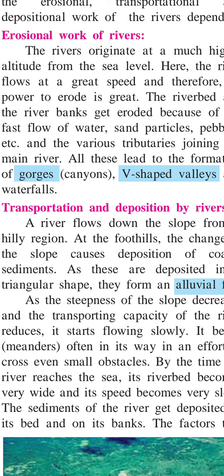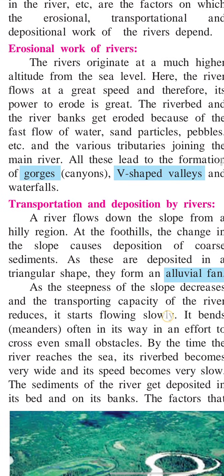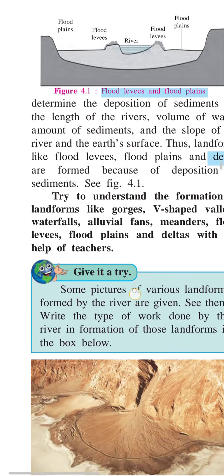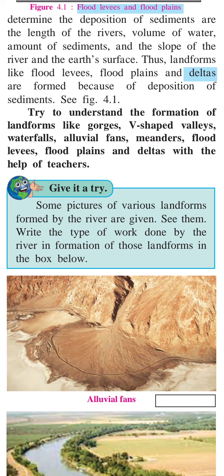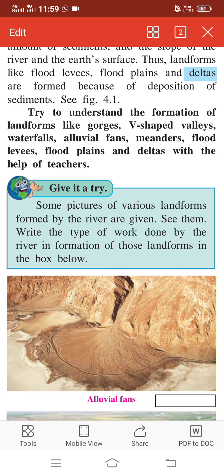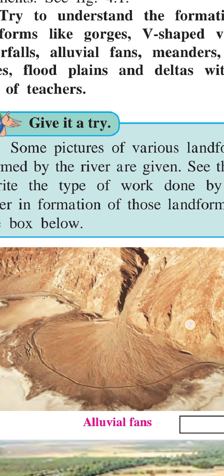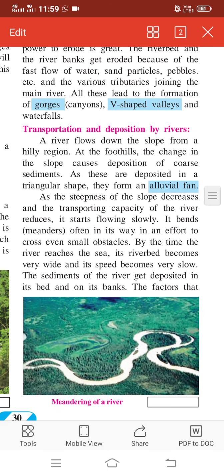When a river flows down the slope from a hilly region to the foothills, the change in slope causes deposition of coarse sediments. These deposits form in a triangular or fan shape and are called an alluvial fan. You can see in this picture — at the foot of the mountain, sediments such as soil, sand, and pebbles carried by the river are deposited here, forming an alluvial fan shape.